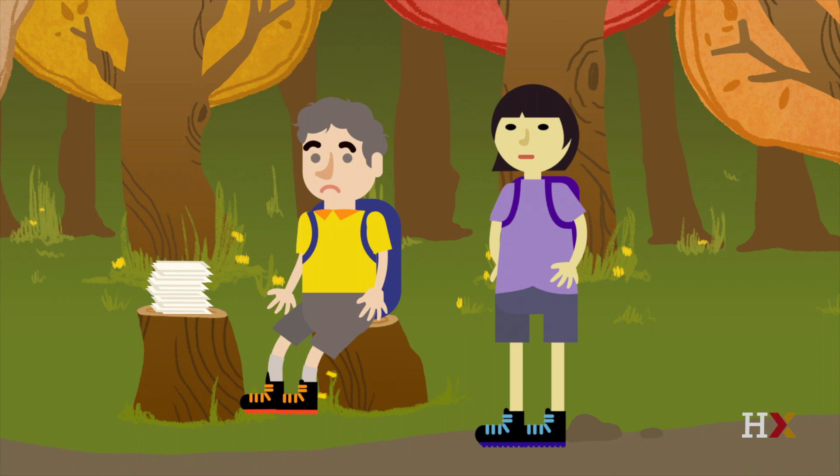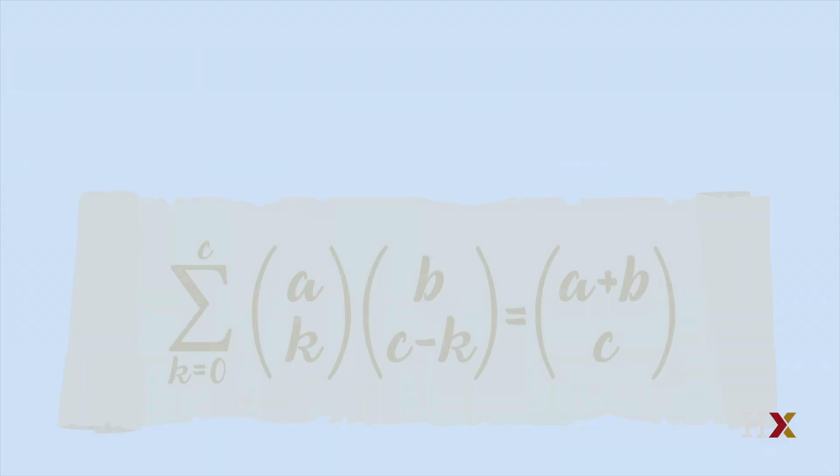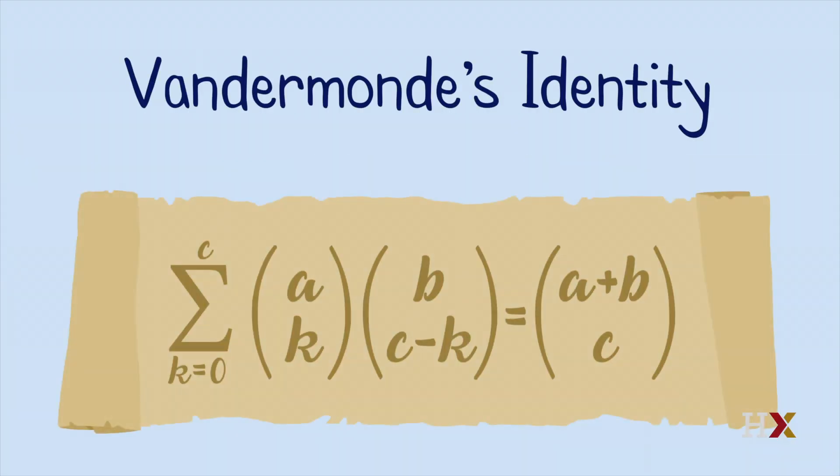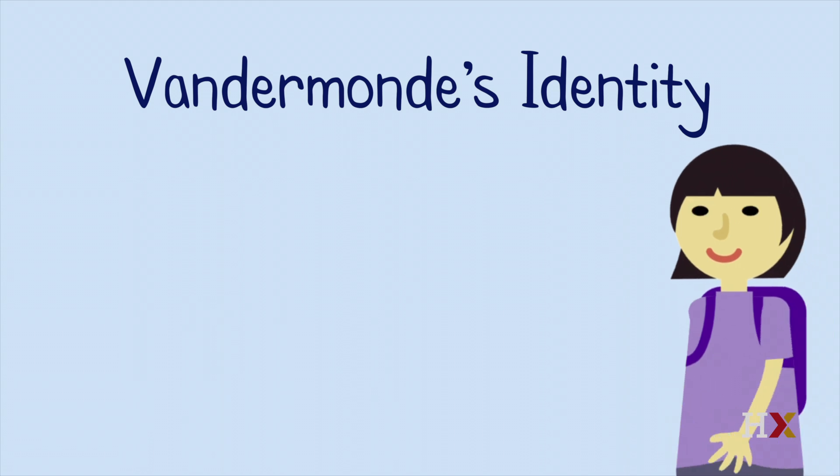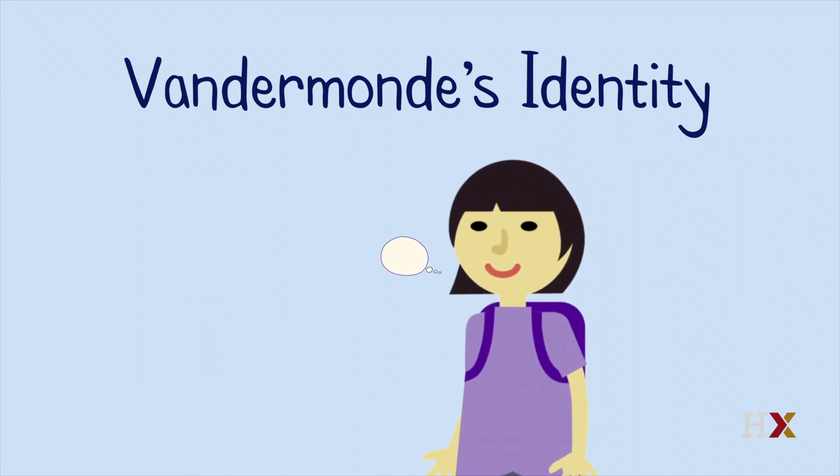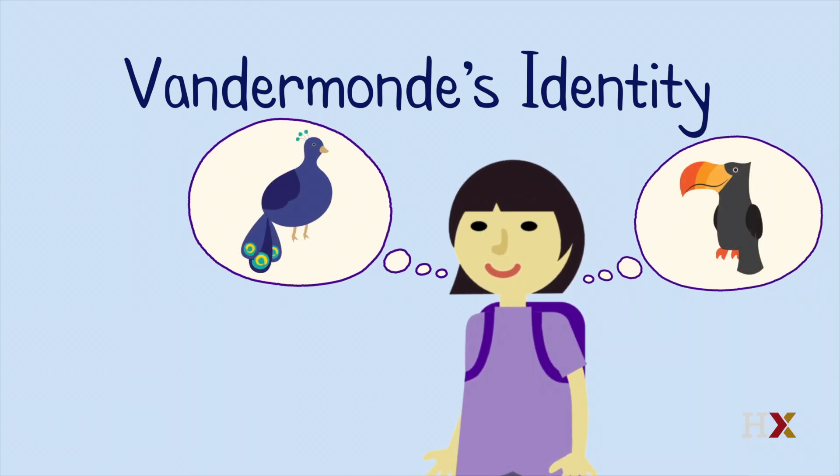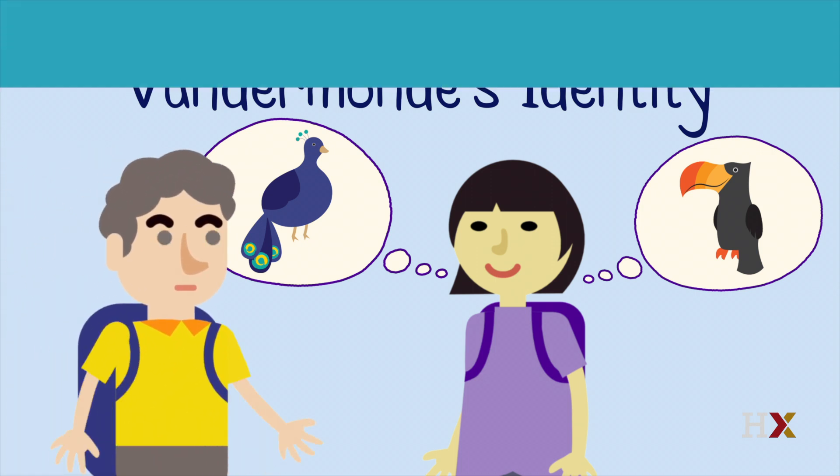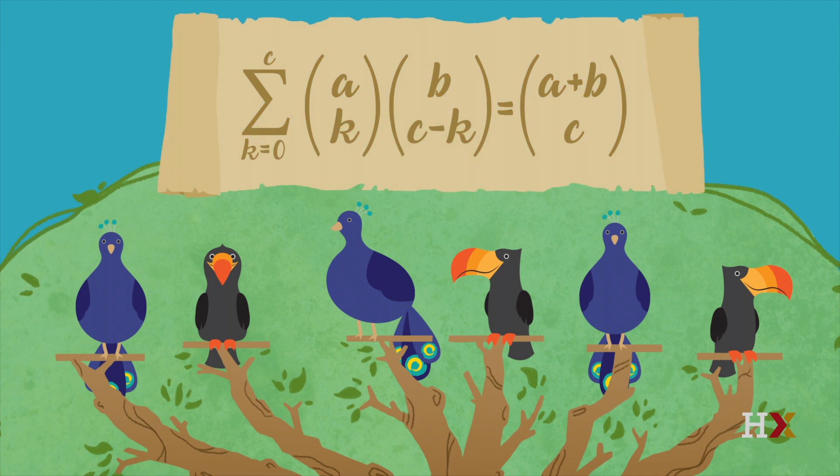The formula on the scroll is called Vandermonde's identity. Sylvia has just discovered a story proof of this identity. She has given it an interpretation rather than doing tedious or intractable algebra. Both sides of the identity count the same thing, so they must be equal.